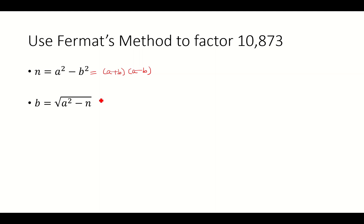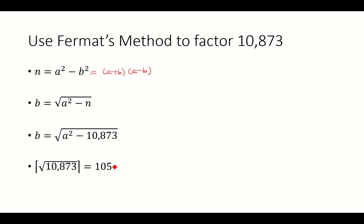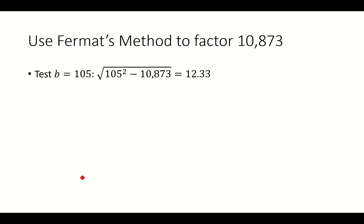The way we're going to do this is by solving for b. So we'll add b squared to both sides, subtract n, and take the square root. Replace n with 10,873. Fermat's method works best when we have values close to the square root of n. So we're going to take the square root of n and round it up, giving us 105 as our starting point to test whether the square root is an integer.